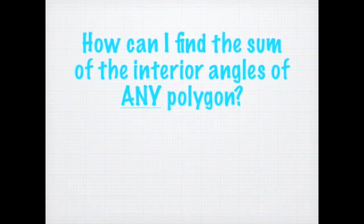How can I find the sum of the interior angles of any polygon? One of the things we should know is that the sum of the interior angles of a triangle is 180 degrees. So if you take any triangle and add up the three interior angles, it has to equal 180 degrees. If we take this knowledge and apply it to other shapes, we can derive a formula.